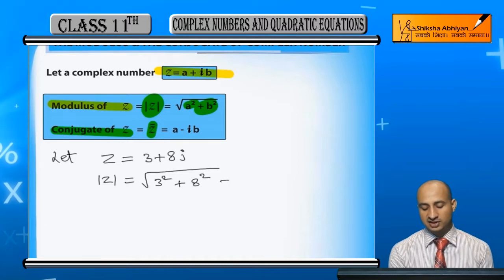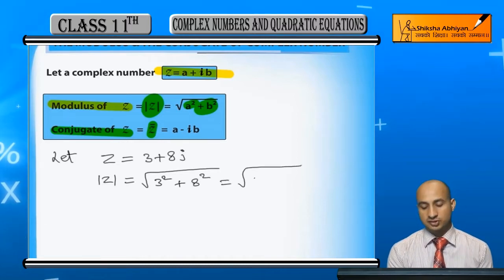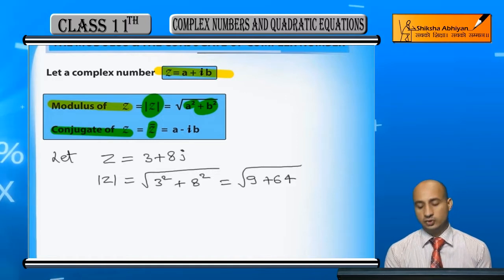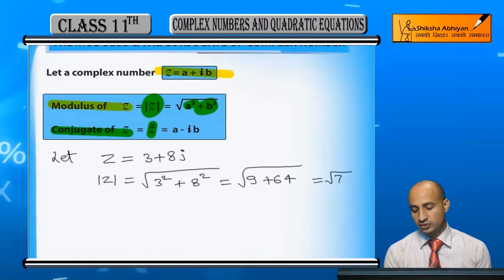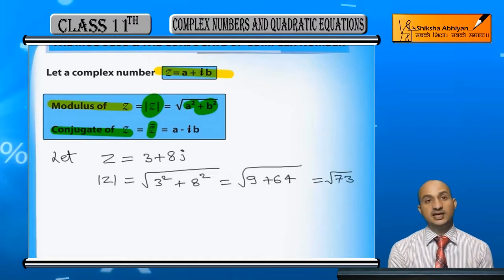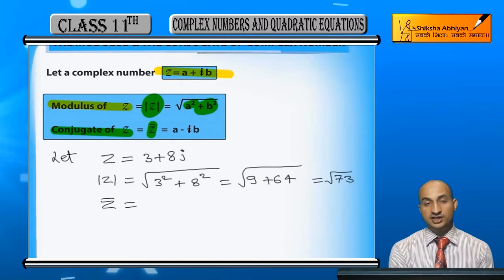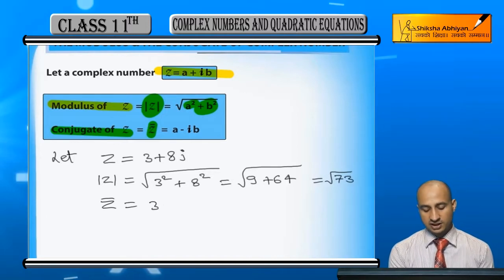For the first example, calculating the modulus: 3 squared is 9, 8 squared is 64, and when you add them both you get square root of 73. Similarly for the conjugate, if z is 3 + 8i, the conjugate will be 3 - 8i.